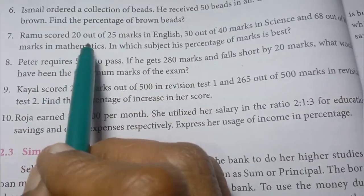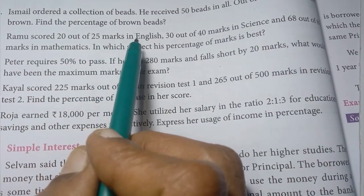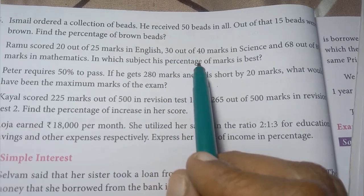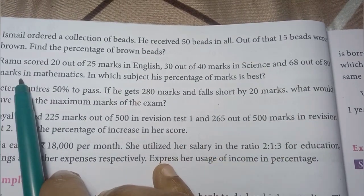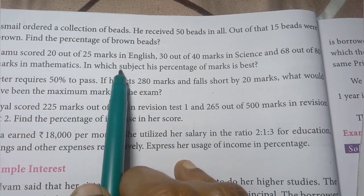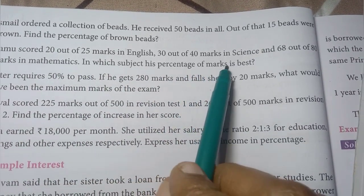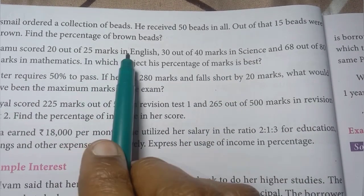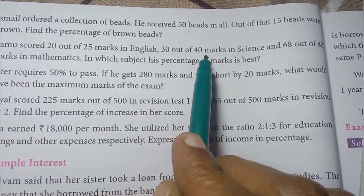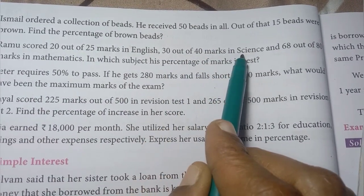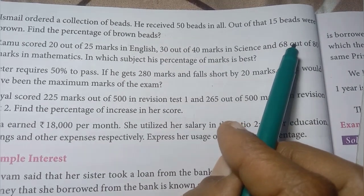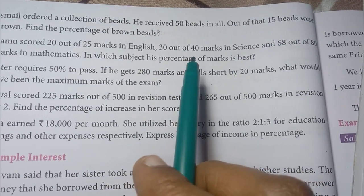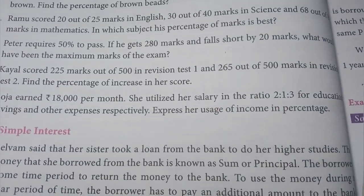Question number 7: Ramo scored 20 out of 25 marks in English, 30 out of 40 marks in Science, and 68 out of 80 marks in Mathematics. We need to find in which subject his percentage of marks is best. English is 20 out of 25, Science is 30 out of 40, and Maths is 68 out of 80.